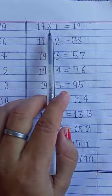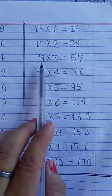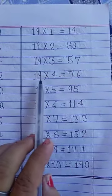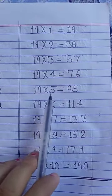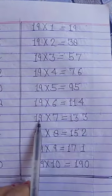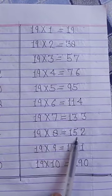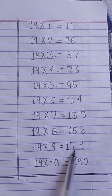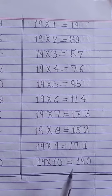Now after 18, table of 19. 19 ones are 19. 19 twos are 38. 19 threes are 57. 19 fours are 76. 19 fives are 95. 19 sixes are 114. 19 sevens are 133. 19 eights are 152. 19 nines are 171. 19 tens are 190. And last table of 20, speak with me and speak loudly.